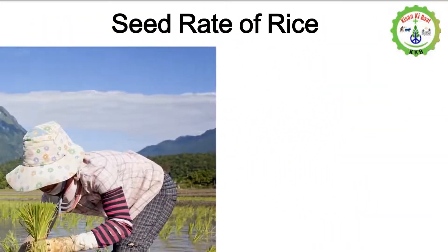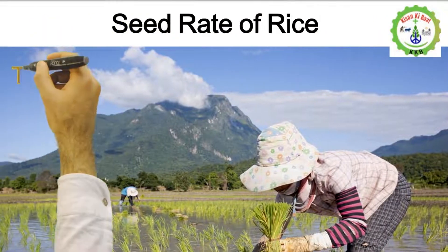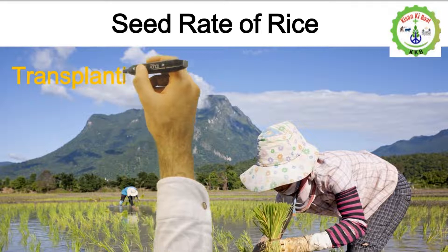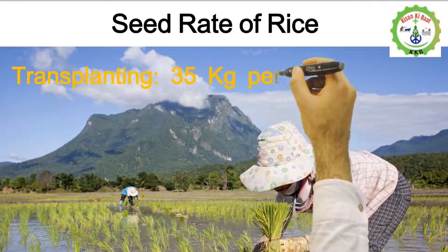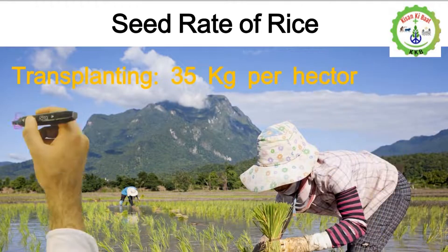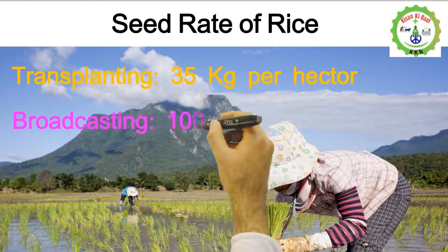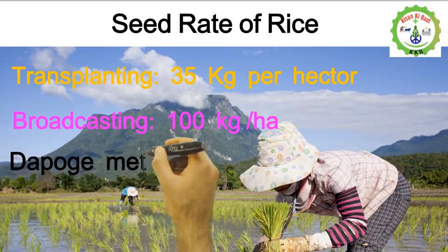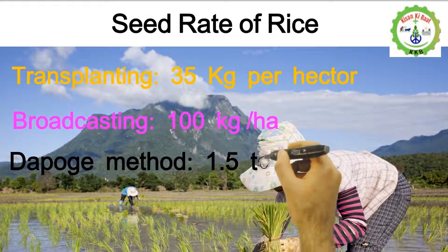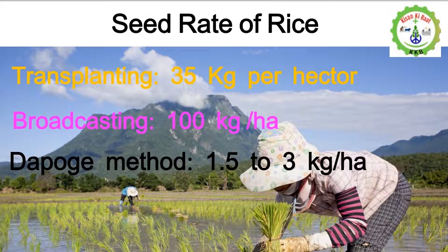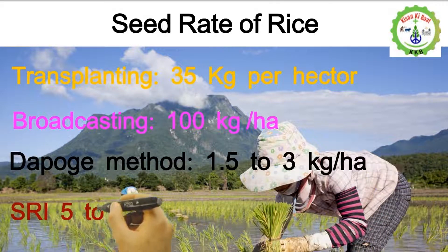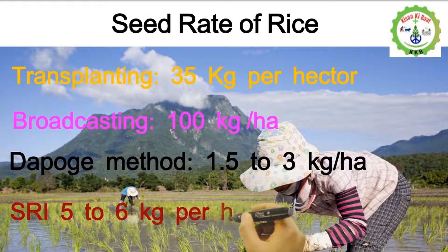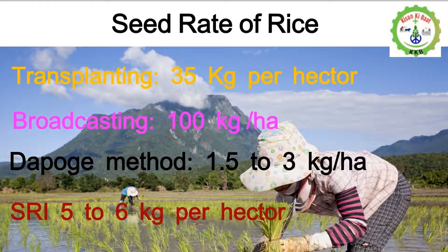Seed rate of rice: transplanting method — 35 kilograms per hectare; broadcasting — 100 kilograms per hectare; tapog method — 15 to 23 kilograms per hectare; SRI method — 5 to 6 kilograms per hectare.